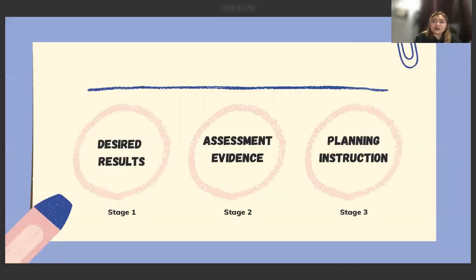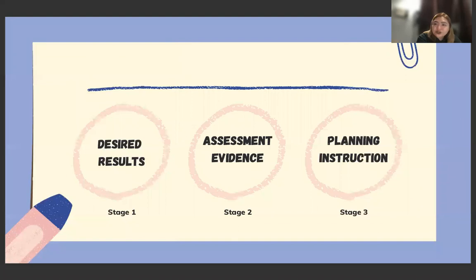It is an instructional design model that purposely designs curriculum for students' understanding through stages of design. We have three stages of design: Stage 1, Desired Results; Stage 2, Assessment Evidence; and Stage 3, Planning Instruction.